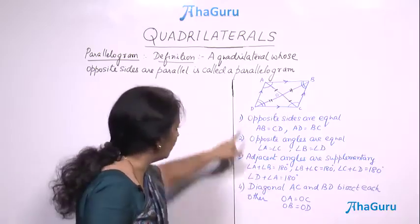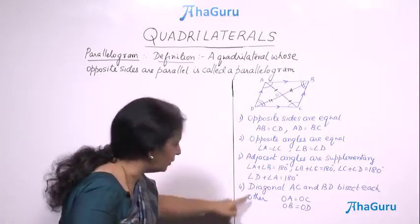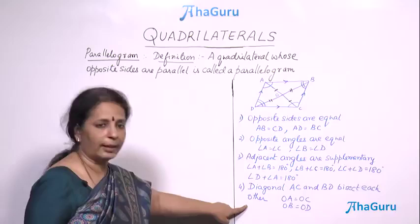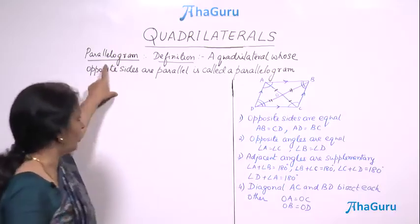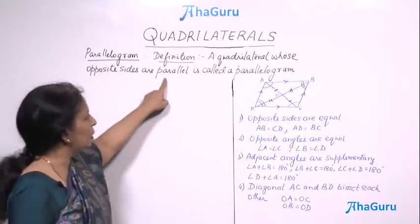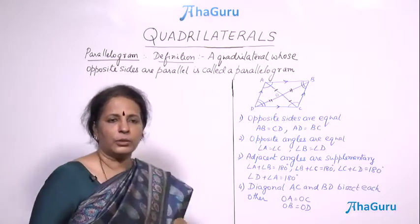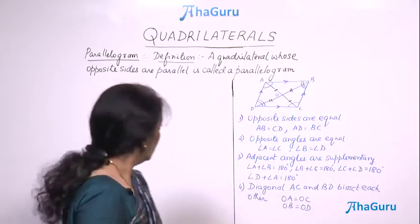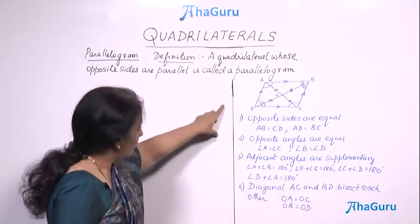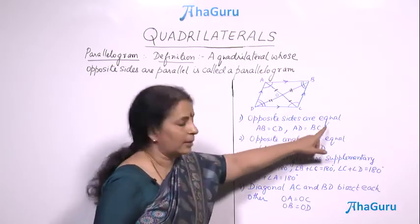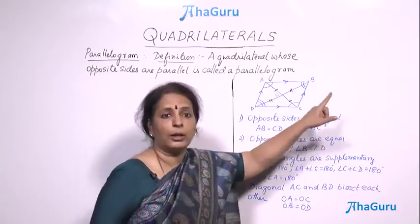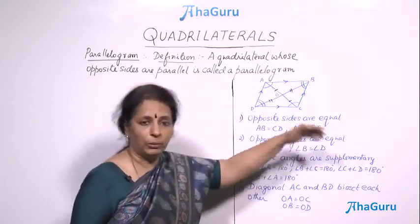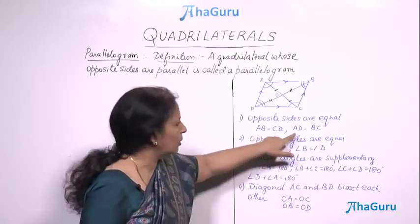Using this definition we will prove these properties — things that can be proved about the parallelogram just using this definition and, of course, our knowledge of triangles, congruency, and things like that. So what are the properties? Opposite sides are also equal. If they are parallel they must be equal — we will prove that.